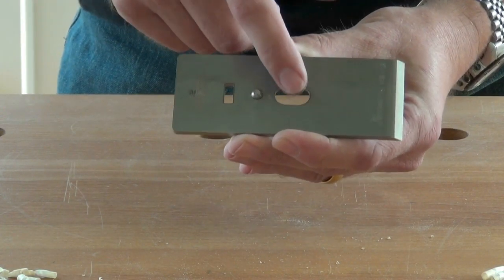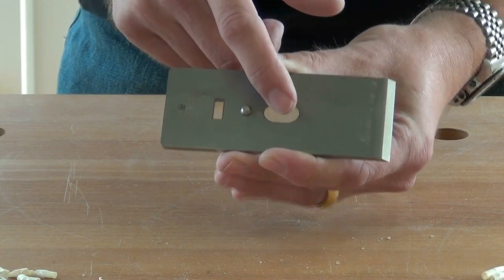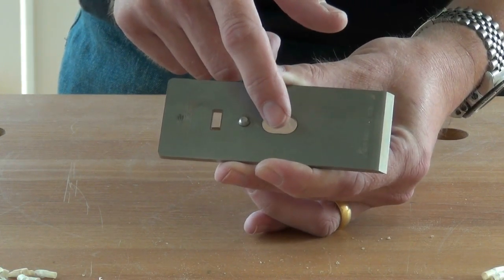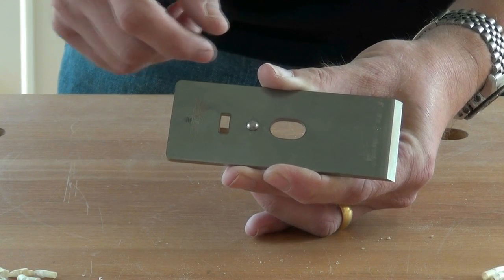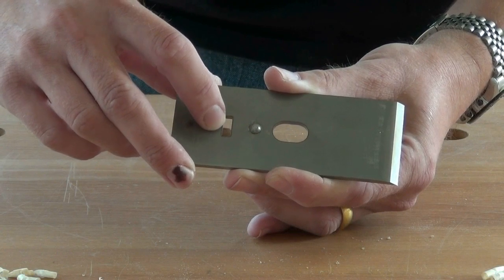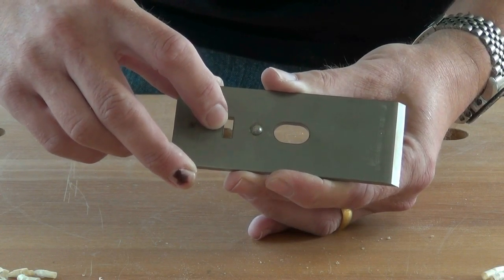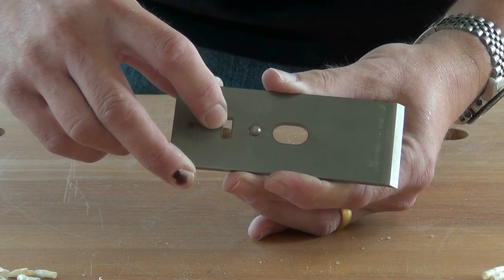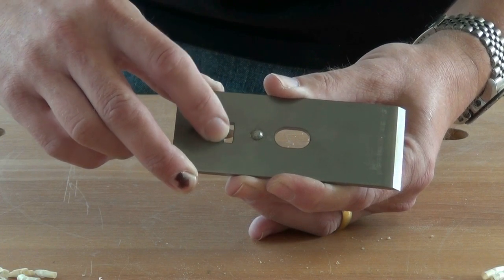The hole you see in the chip breaker is where the screw in the frog comes through. The slot in the chip breaker is what attaches the blade assembly to the advancement mechanism in the frog.